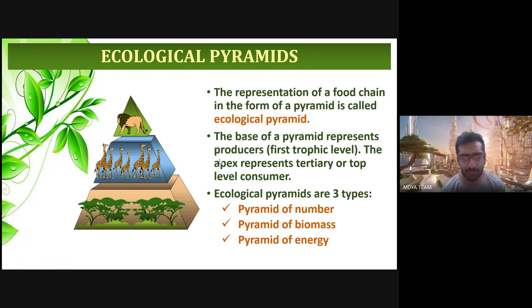Ecological pyramids are of three types: pyramid of energy, pyramid of biomass, and pyramid of number.